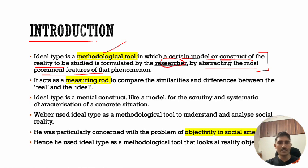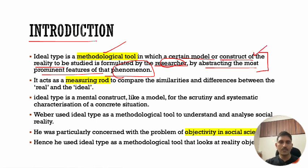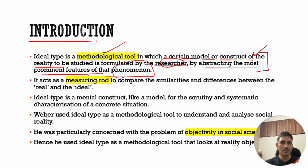A researcher who wants to research any subject, who wants to study any phenomenon — in order to analyze and understand that reality, he will abstract the most prominent features of any phenomenon. For example, if you want to study religion, the prominent features of religion will be abstracted, and after that abstraction, a model construct will be made — that is basically known as an ideal type.